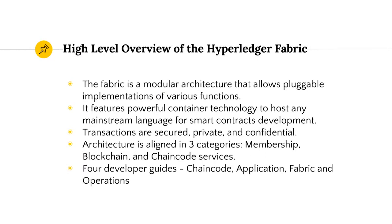The Hyperledger project has multiple projects under it. One of them is Hyperledger Fabric, which is still under incubation and was initially contributed by IBM. The Fabric is a modular structure that allows pluggable implementations of various functions. It features powerful container technology to host any kind of mainstream language for smart contract development. Transactions on the Fabric are secure, private, and confidential. The Fabric is aligned into three categories: membership, blockchain, and chain code services — where chain code is basically the smart contract.